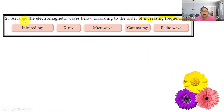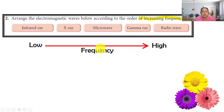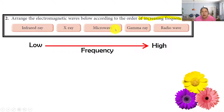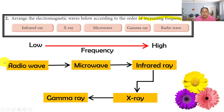Next, arrange the electromagnetic waves according to increasing frequency — from low to high. The order is: radio, microwave, infrared, x-ray, and gamma ray. Let's verify: radio, micro, infrared, x-ray, and gamma.